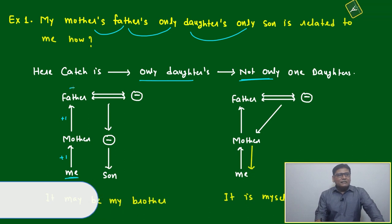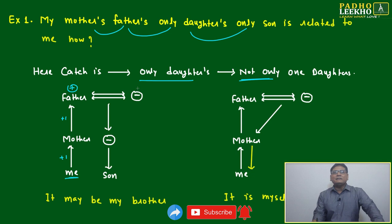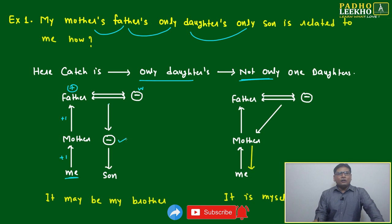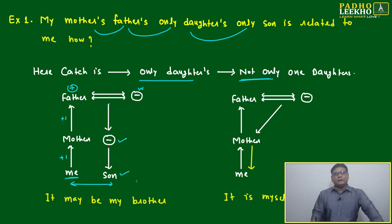Afterwards, 'only daughter' means this father had a wife — this marriage produced a daughter. And then 'only son' — we came back to the same generation level as me.